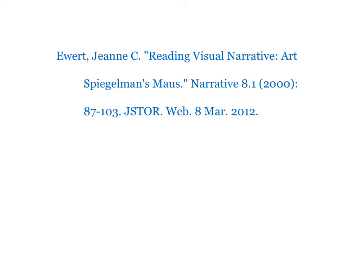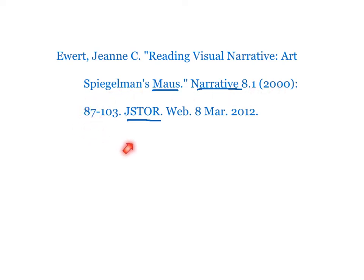Here's what the resulting citation should look like from a JSTOR article. Once again, I have to add some italics: Narrative, the name of the journal, should be underlined. JSTOR, the name of the database, should be underlined. Maus, the name of the book, should be underlined. Beyond that, I've got the same elements in the same order: author's name reversed followed by a period, the full title of the article in quotation marks, the name of the journal, volume number, issue number, year, page numbers, database, medium, and date I accessed it.